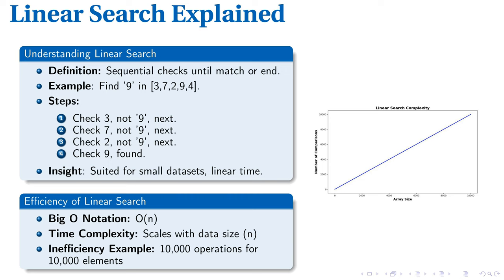Beginning from the first element, 3, the algorithm moves sequentially, checking 7 and 2. When 9 is encountered, the search is halted. This basic operation is the essence of a linear search. Now let's turn our attention to its efficiency.